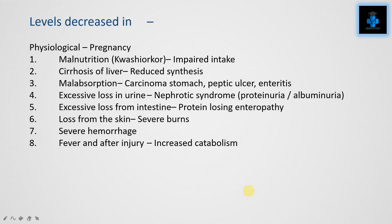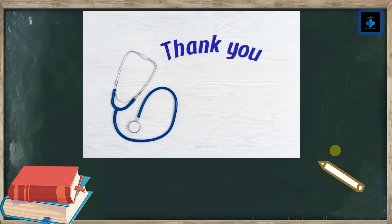The level of plasma proteins is decreased physiologically in pregnancy. Other conditions include malnutrition such as kwashiorkor, cirrhosis of the liver, malabsorption, excess loss in urine, excess loss of protein from the intestine, loss from the skin due to severe burns, severe hemorrhage, and also fever and post-injury, which increase catabolism of proteins. Hope you have understood the video — like, subscribe, and press the bell button for more videos. Thank you for watching.